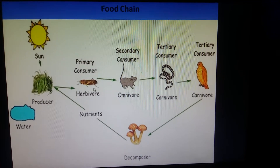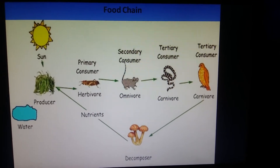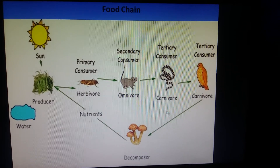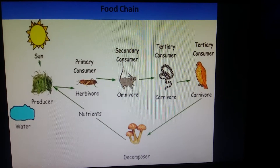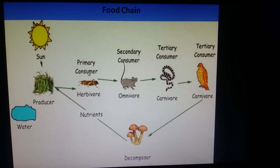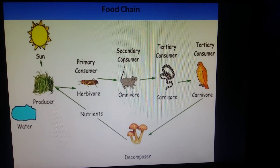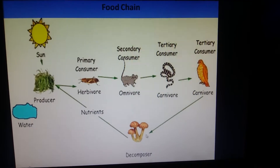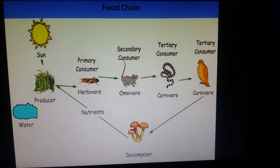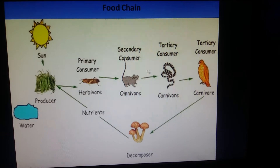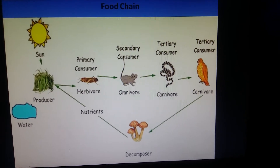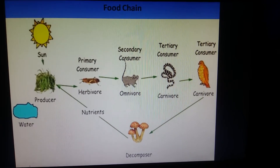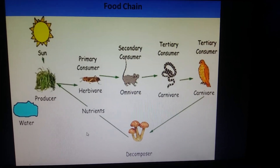Some animals eat primary consumers and producers as well — they are secondary consumers and omnivores. Then there are tertiary consumers, which are carnivores. There are also decomposers — organisms which feed on dead and decaying plants and animals, breaking complex organic matter into simple form and returning it back to the environment.